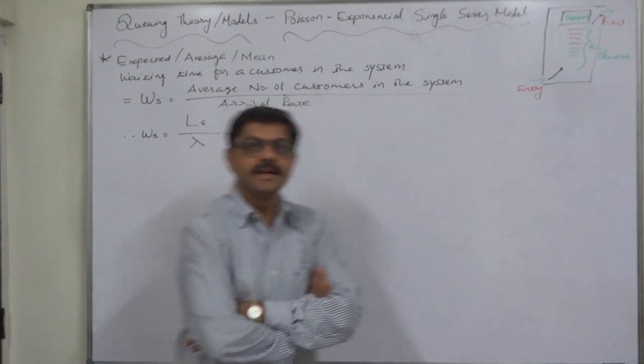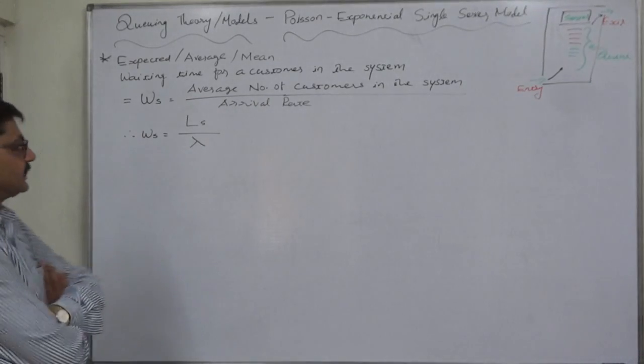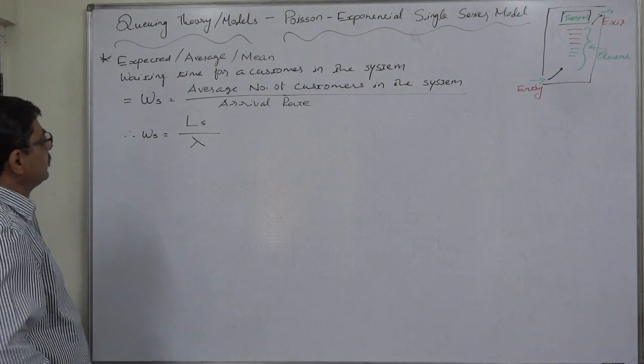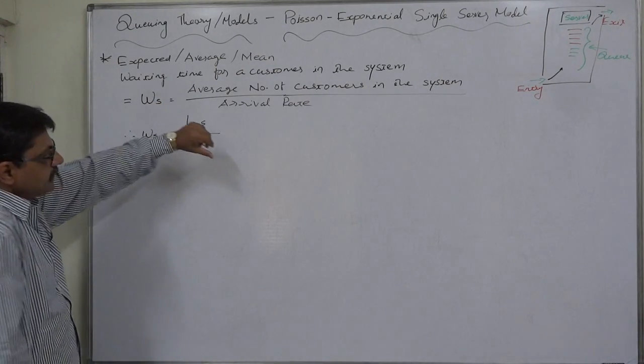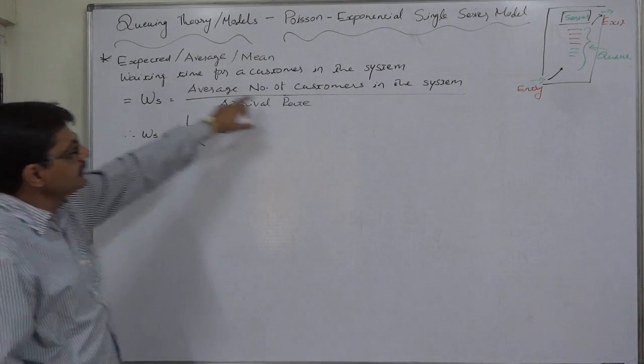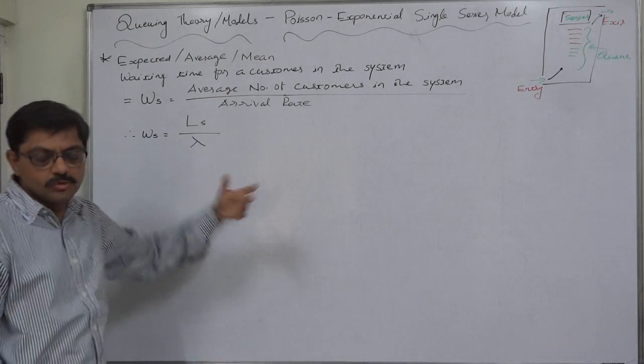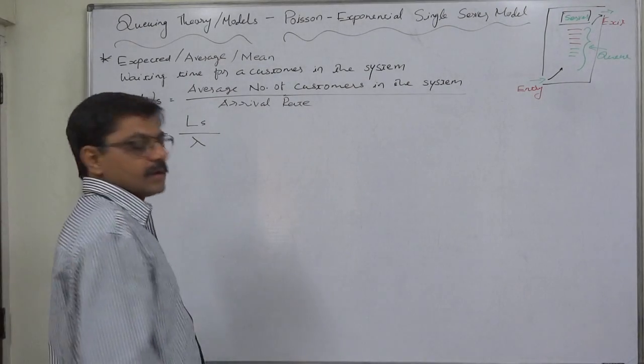What is the expected waiting time for a customer in the system? The simple logic is that the average waiting time for a customer in the system is the ratio of average number of customers in the system to the arrival rate, because both are in number of customers.